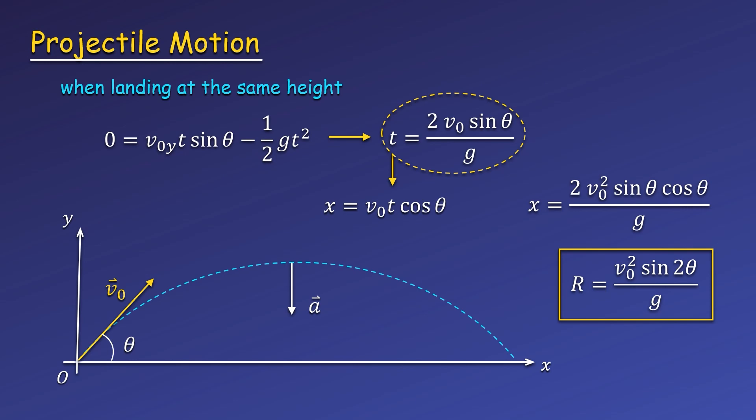I've replaced x with a capital R, which stands for the range of the projectile. The range is just the distance a projectile travels in the x direction or horizontally, and we call this equation the range equation.